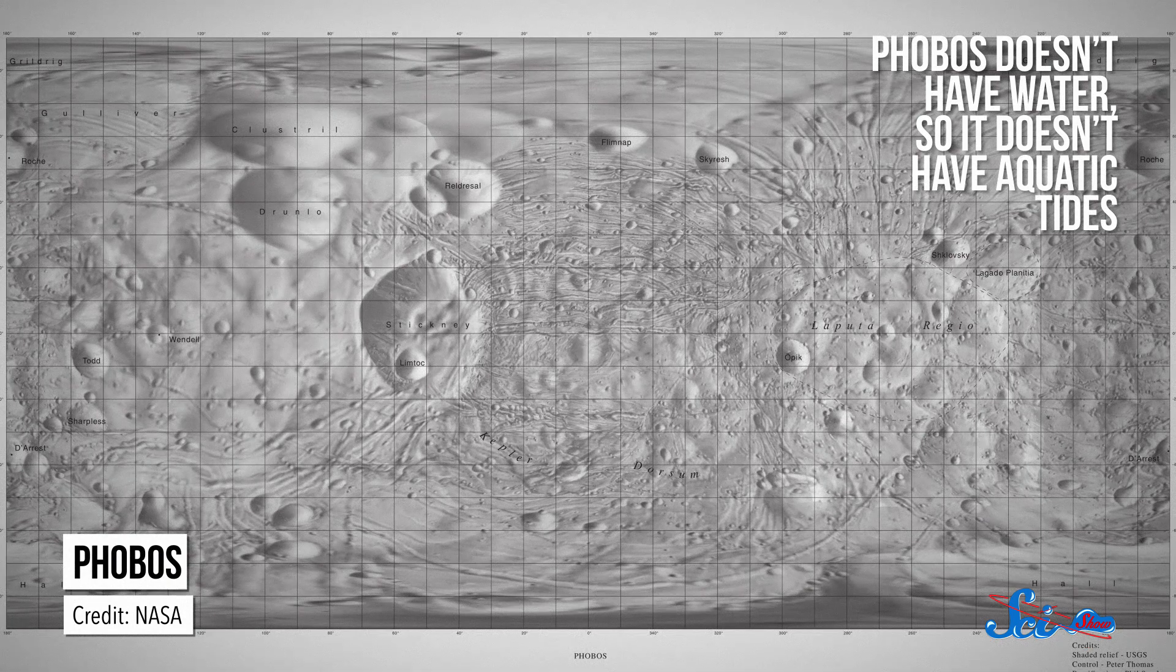Phobos doesn't have water, so it doesn't have aquatic tides, but it's still under that same kind of tidal strain. It's just that the strain acts only on the rock itself. And at the Roche limit, that tidal bulge will start ripping chunks of rock off the moon. So why won't those chunks of rock just crash into Mars instead of becoming rings?